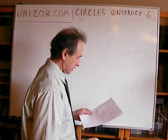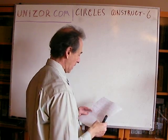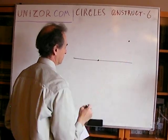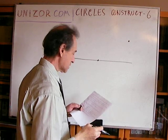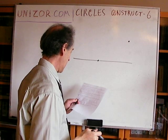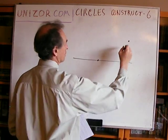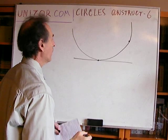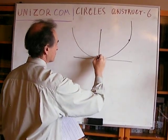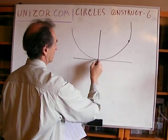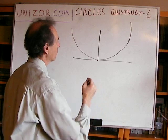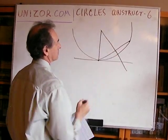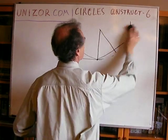Given a straight line, a point on it, and a point outside it — construct a circle tangential to the given line at the given point and containing the other given point. Well, this is really easy. The center is supposed to be on the perpendicular to the given line at the given point, and also it's supposed to be equidistant from these two points, which means it's supposed to be on the perpendicular bisector. Easy.